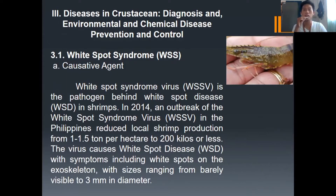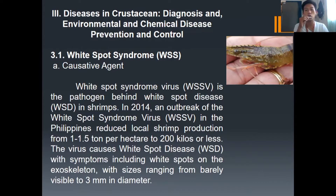Diagnosis and environmental and chemical disease prevention and control. First, we have White Spot Syndrome, or WSS. Its causative agent is White Spot Syndrome Virus, WSSV, which is the pathogen behind white spot disease, WSSD, in shrimps. In 2014, an outbreak of white spot syndrome virus in the Philippines reduced local shrimp production from 1 to 1.5 tons per hectare to 200 kilos or less. The virus causes white spot disease with symptoms including white spots on the exoskeleton, with sizes ranging from barely visible to 3 mm in diameter.